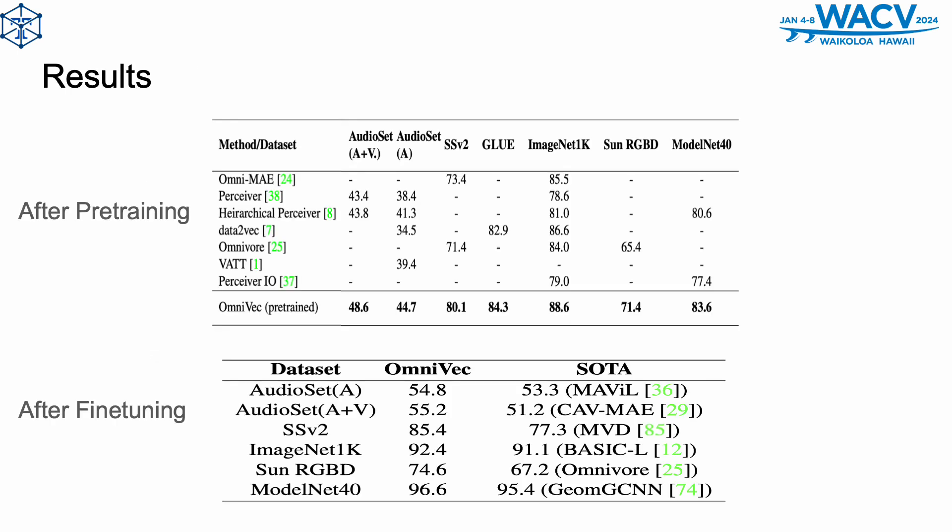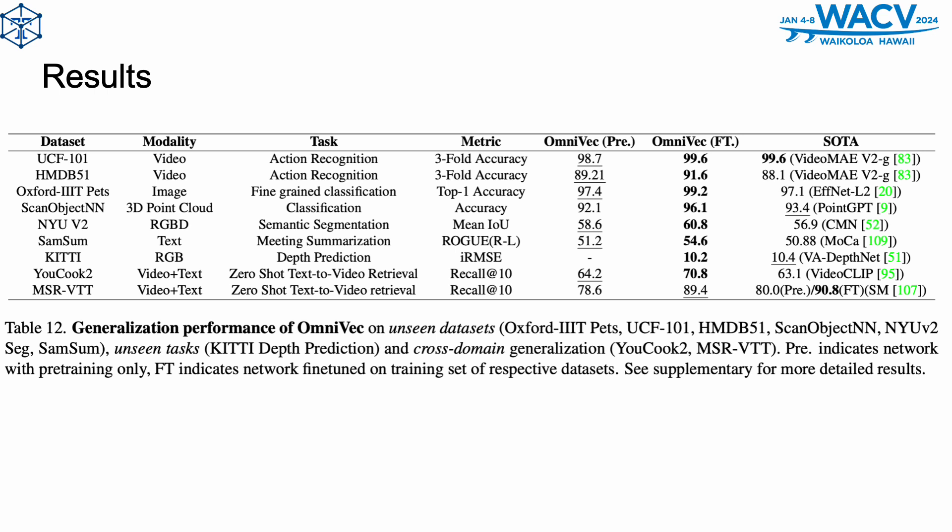These are a few results of our pre-training and fine-tuning strategies. In the table on the top, we compare against similar methods where our method has only been pre-trained using their proposed methodology, and we see that we outperform them across seven benchmarks. If we fine-tune our method on respective training sets, we outperform state-of-the-art methods as well. For more results on more datasets, kindly refer to our paper. We also show the generalization performance of OmniVec across video, 3D point cloud, depth prediction, text summarization, and zero-shot video plus text, achieving state-of-the-art across all tasks when fine-tuned.